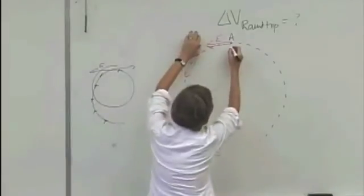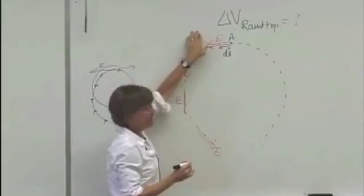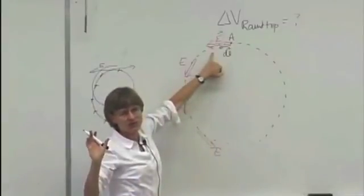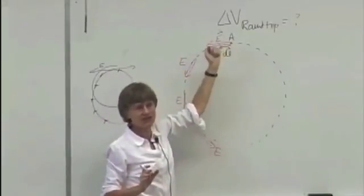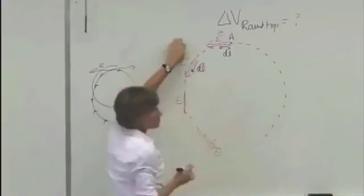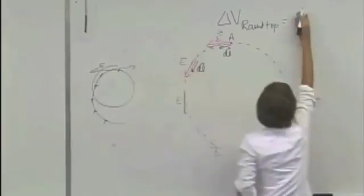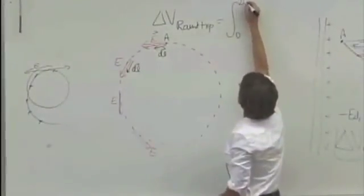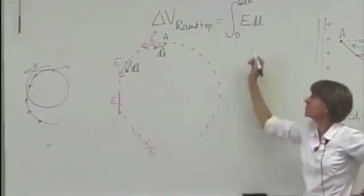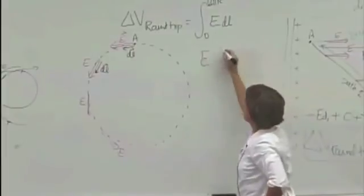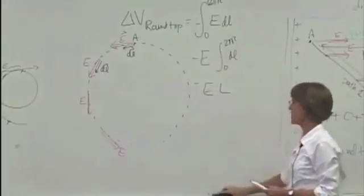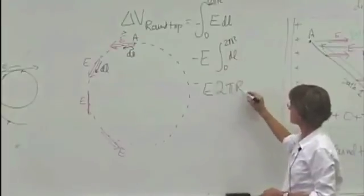Let's see how we'd add this up. Here's an E, and so we take a little DL this way. We have E dot DL, and notice the angle — it's easier to use the cosine evaluation formula here because they're in the same direction. So E dot DL is just E times DL. And here, we have E that way, and DL is that way also, so we have another E times DL. This would equal the integral from zero to the circumference, two pi R, of E times DL. The magnitude of E isn't changing, so that's E times two pi R, or minus E times two pi R.